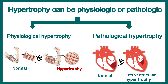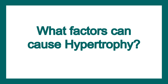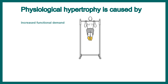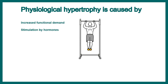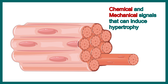Overall there is more myofibril synthesis and increased cellular dimensions. Just like hyperplasia, hypertrophy could be pathological or physiological. The factors that can cause hypertrophy include increased functional demand, stimulation by hormones, and induction of growth factors. All these signals converge on cell surface receptors.